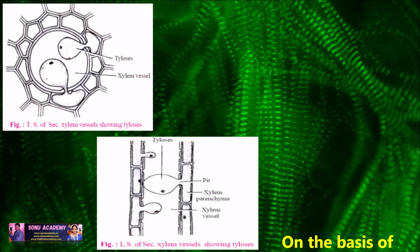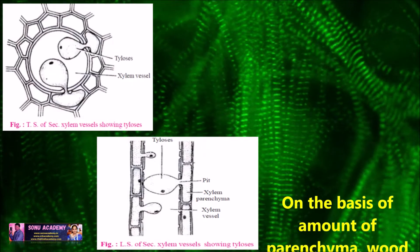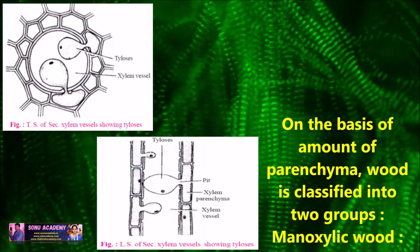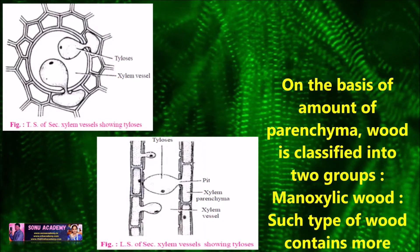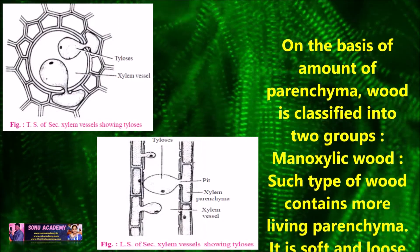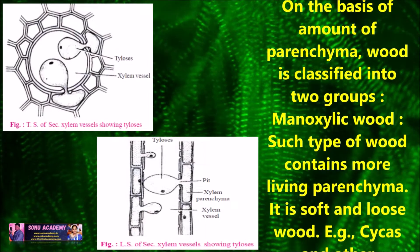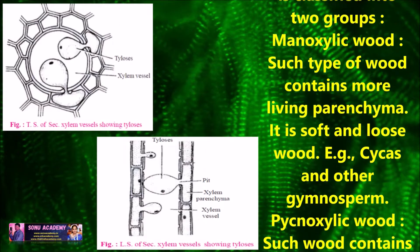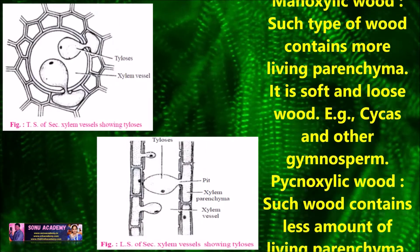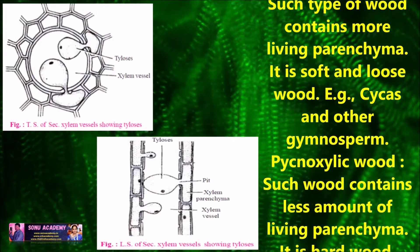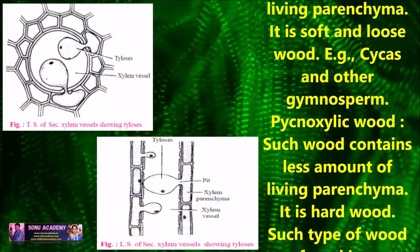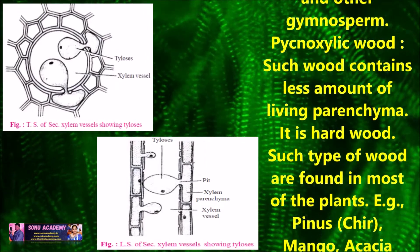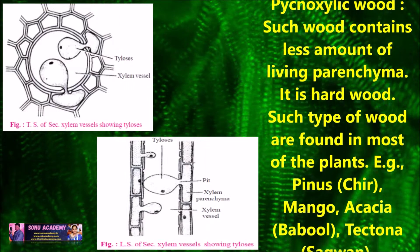On the basis of amount of parenchyma, wood is classified into two groups. Manoxylic wood contains more living parenchyma; it is soft and loose wood, e.g., Cycas and other gymnosperms. Pycnoxylic wood contains less amount of living parenchyma; it is hard wood found in most plants like Pinus, mango, Picea, Tectona, etc.